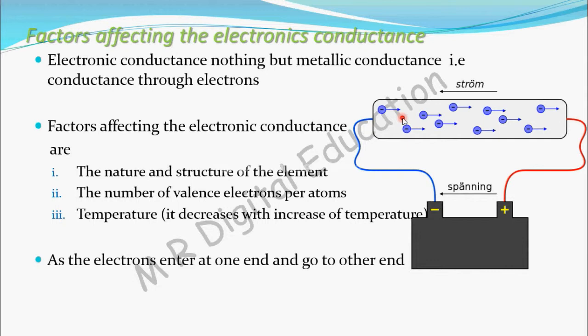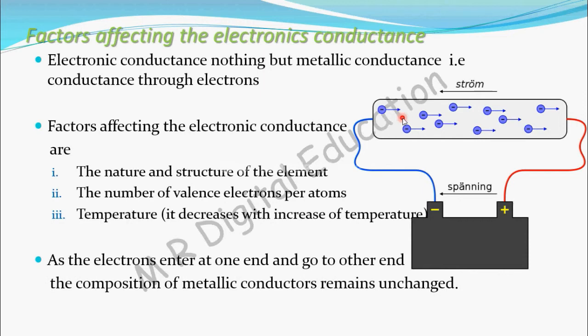For metals, as the electrons enter through one end and go to the other end, the composition of metallic conductors remains unchanged. Since electrons enter from one side and come out the other to complete the circuit, the composition of the conductor — whether copper or silver — remains unchanged for electronic conductors.